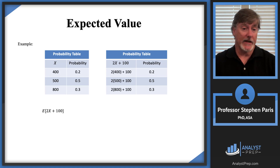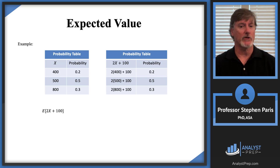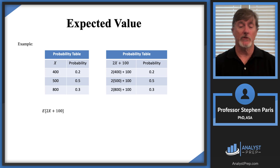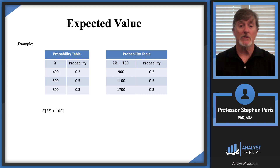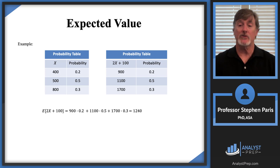When x is 400, we get 2 times 400 plus 100; when x is 500, we get 2 times 500 plus 100; and when x is 800, we get 2 times 800 plus 100. Doing the arithmetic, the new values are 900, 1100, and 1700, with corresponding probabilities 0.2, 0.5, and 0.3.